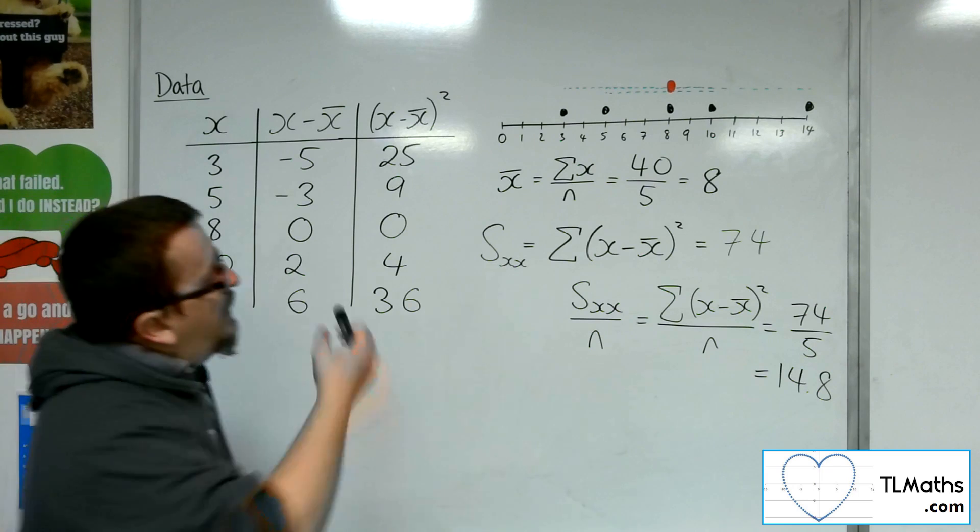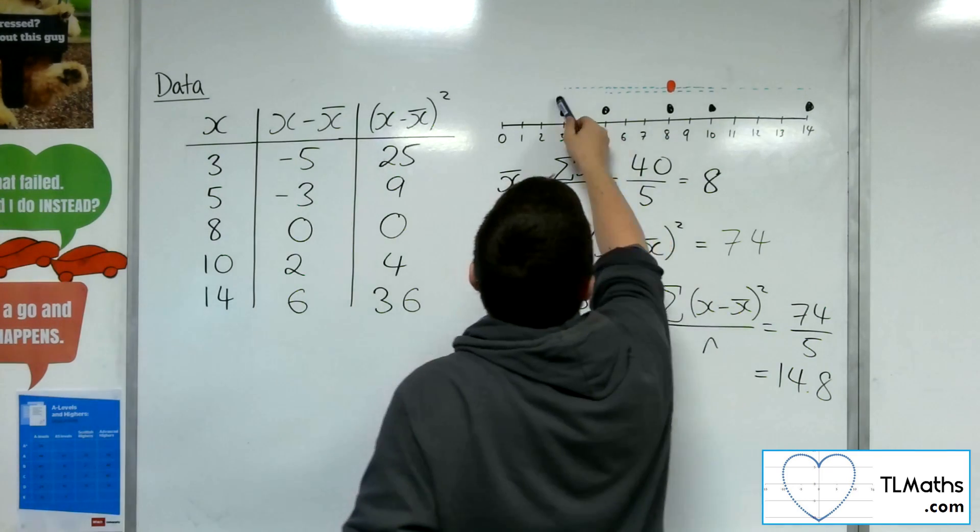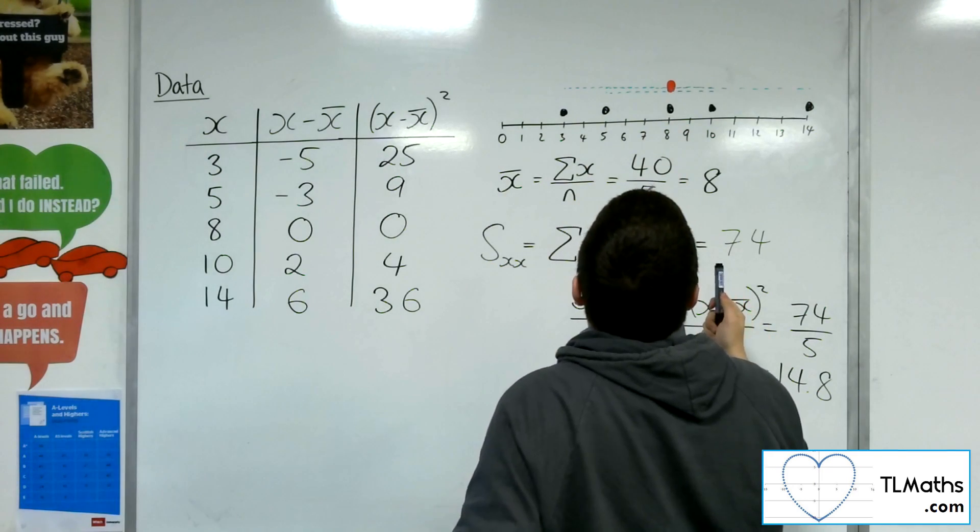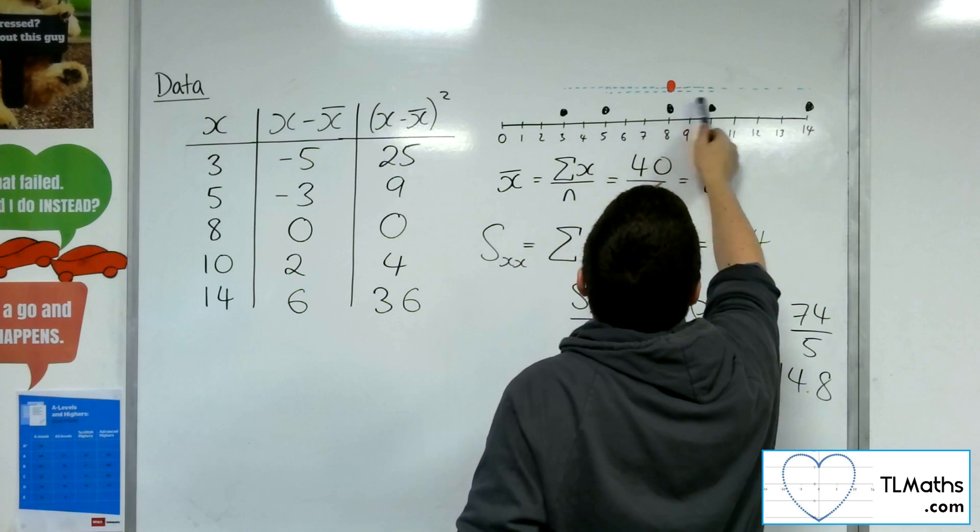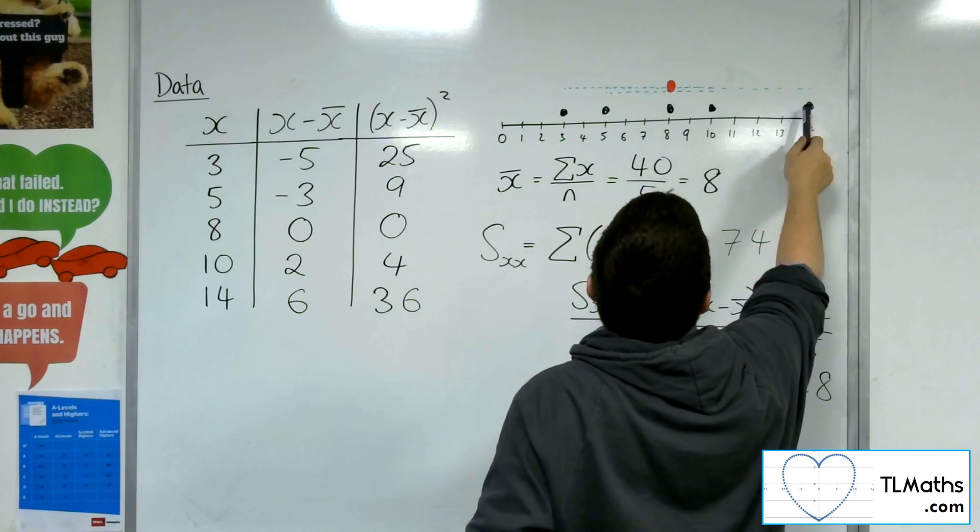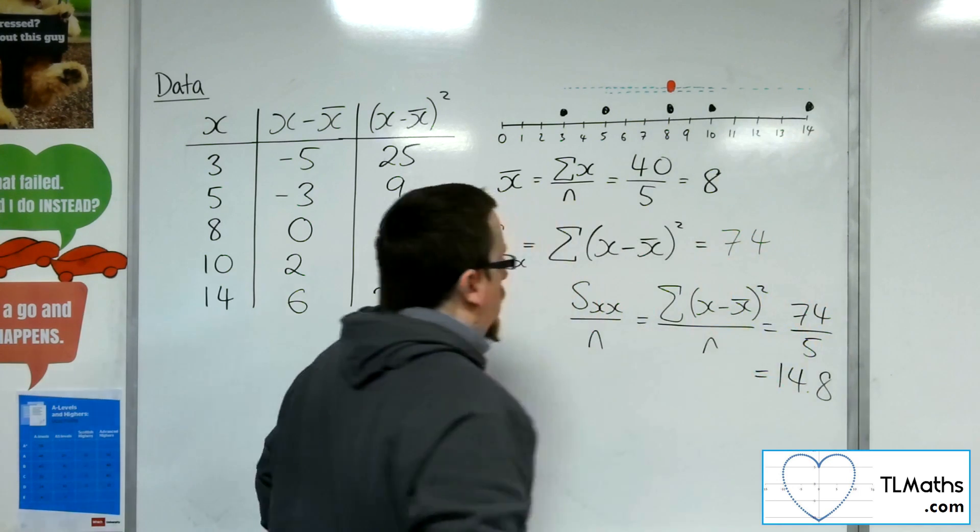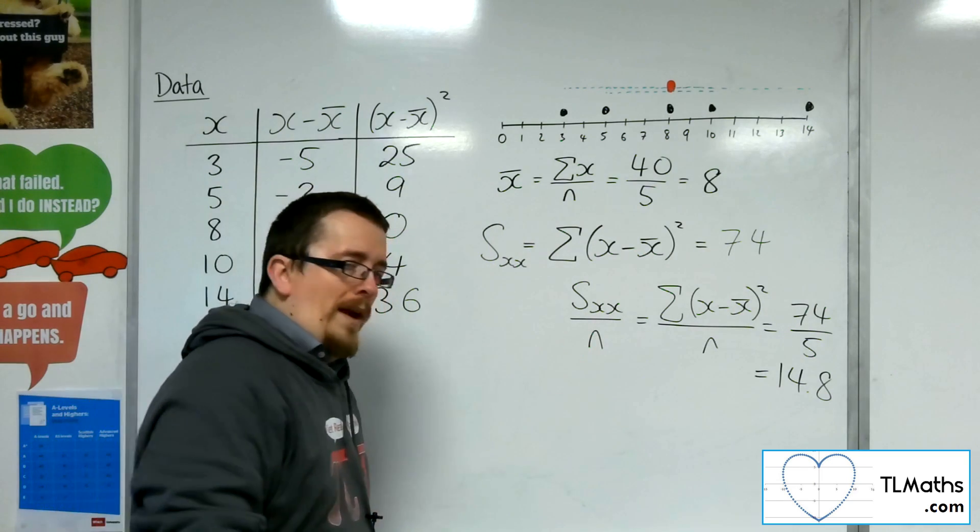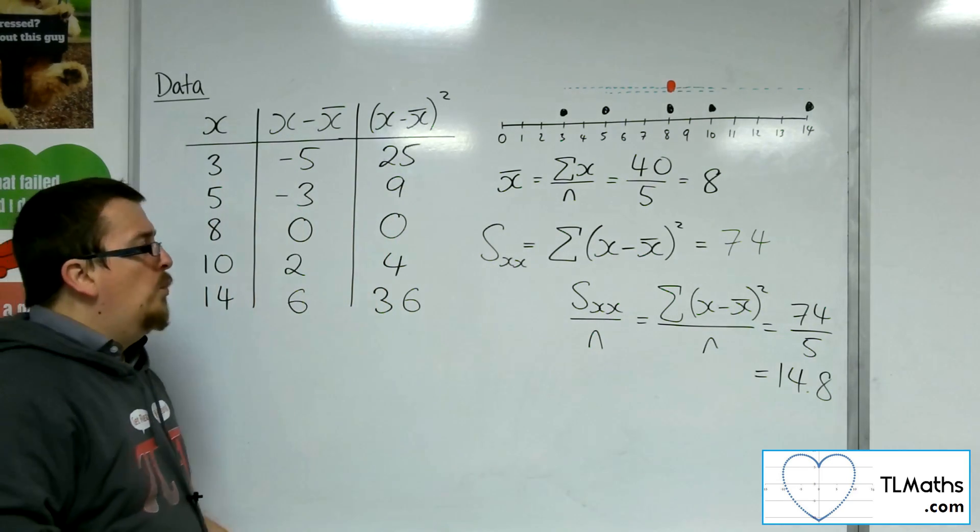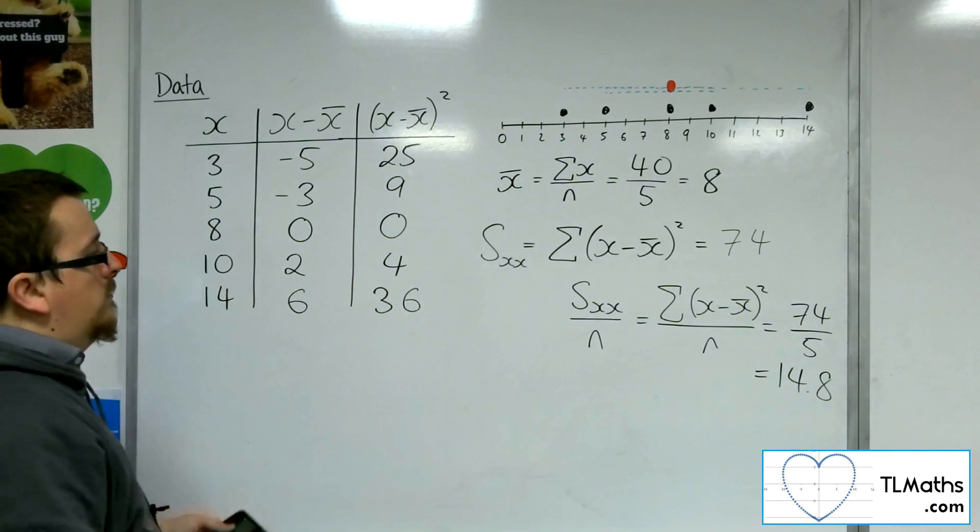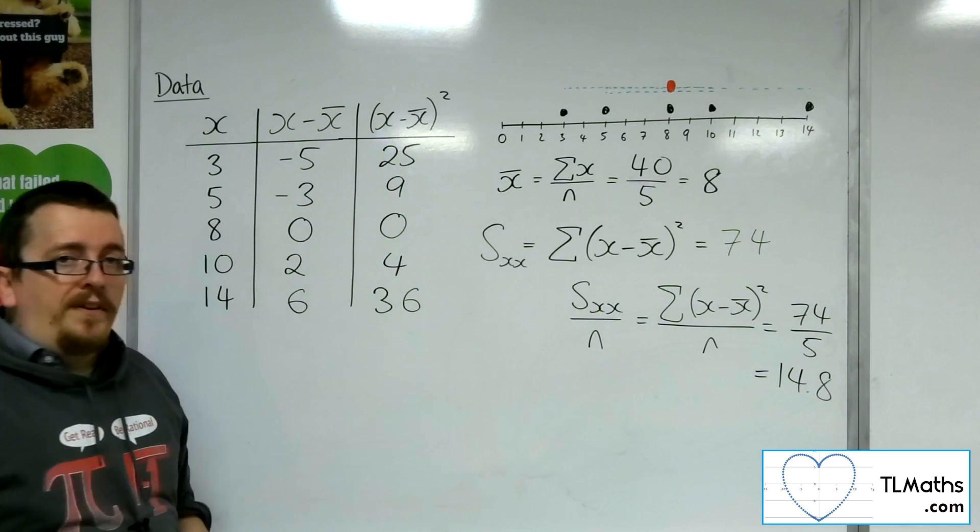Would you say that those data points that I originally started with are on average 14.8 away from the mean? Well, no, they're not, are they? Because that one, 3 to 8, that's 5. And that's 3. And that's 2. And that's 6. So 14.8 is way too large. So what's happened? Well, I squared all the distances, didn't I?